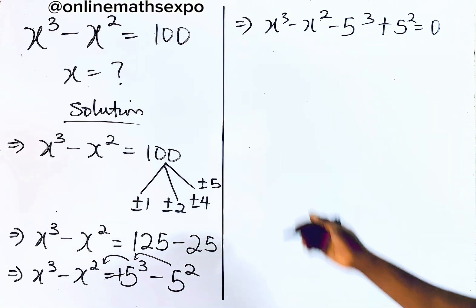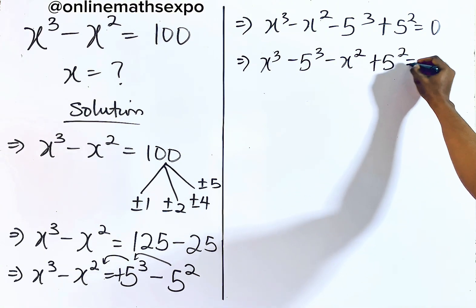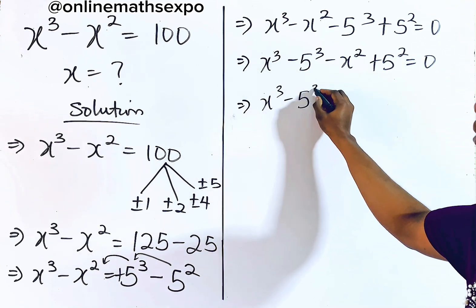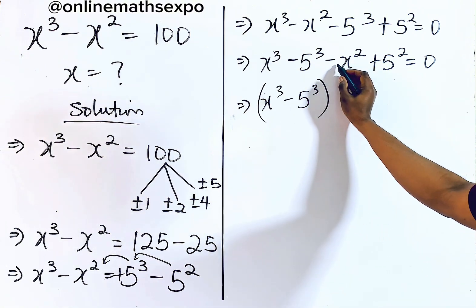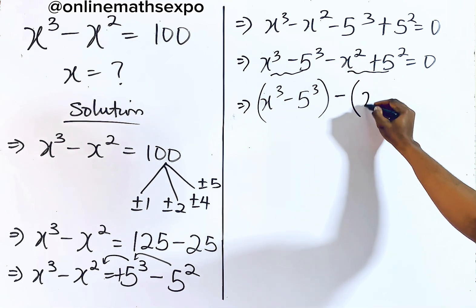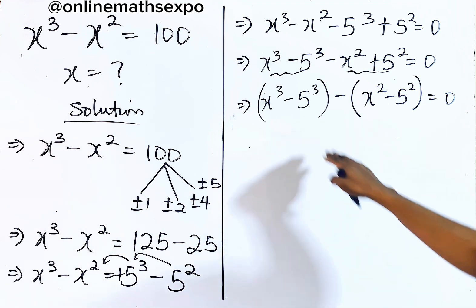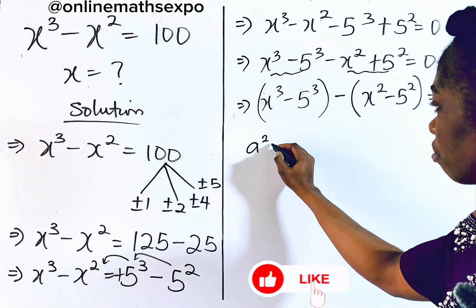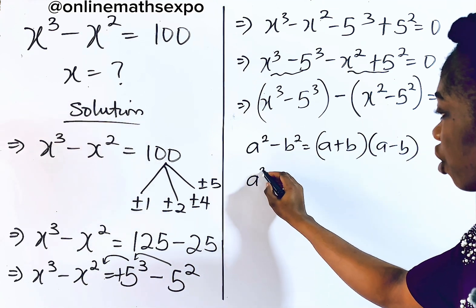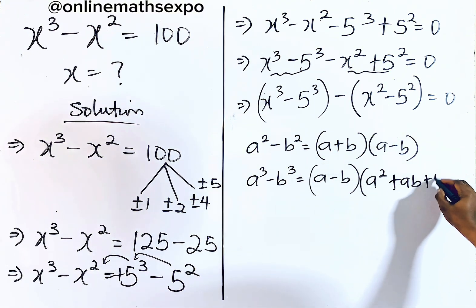We take terms of the same powers together: x cubed minus 5 cubed, then factor out a negative sign from the remaining terms to get minus (x squared minus 5 squared), equal to 0. Recall that a squared minus b squared equals (a+b)(a−b), and a cubed minus b cubed equals (a−b)(a²+ab+b²).